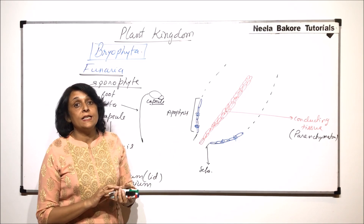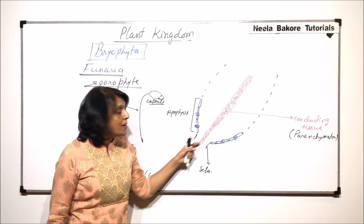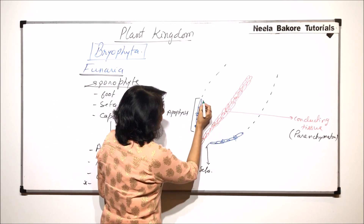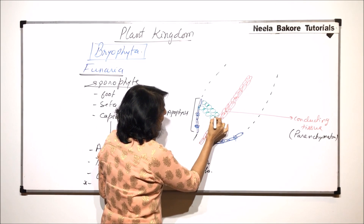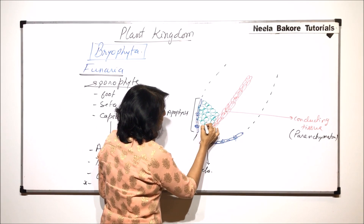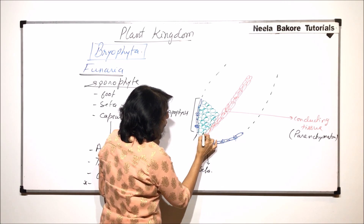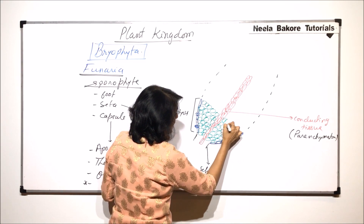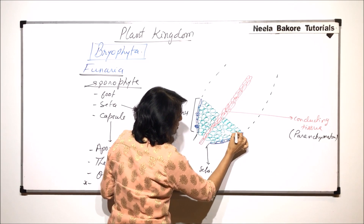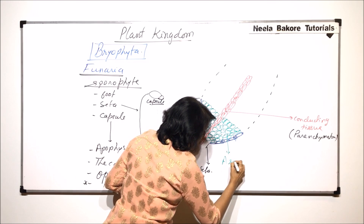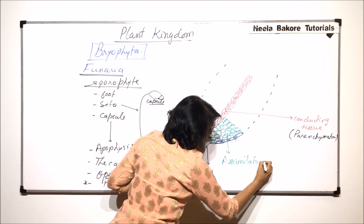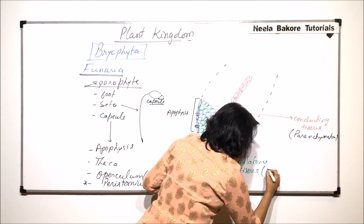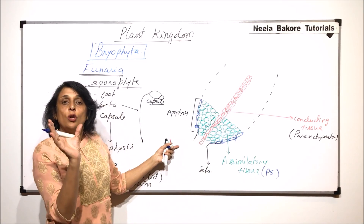These parenchymatous cells are of two types. The cells which run in the middle of this capsule are compactly arranged. Because of this compact arrangement, they appear slightly flat and they are the ones which help in conduction of water. As bryophytes do not have vascular tissue — xylem and phloem — it is the parenchyma only which helps in conduction of food and water. So we call it conducting tissue, but we must remember this is not xylem and phloem — it is parenchymatous.